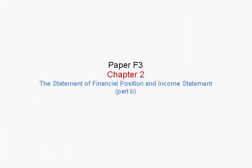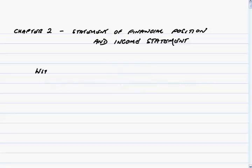Before we look at the nice presentation of the Statement of Financial Position and Income Statement, I need to say a few more words about a term we used at the end of the last example, which was withdrawals — or the other word that means the same thing — drawings. Because if you remember in item K of the previous example, the owner took $1,200 from the business, and we call that withdrawals.